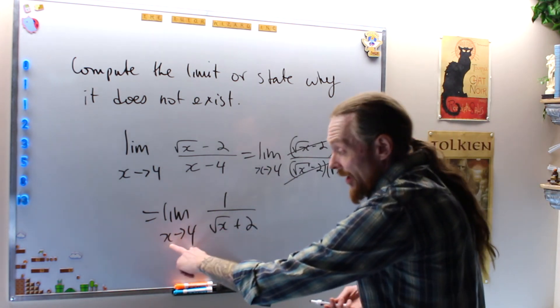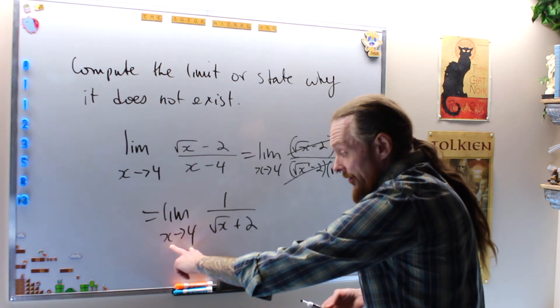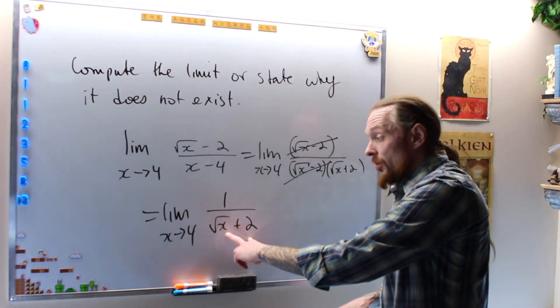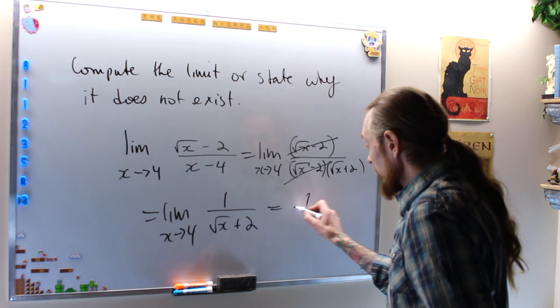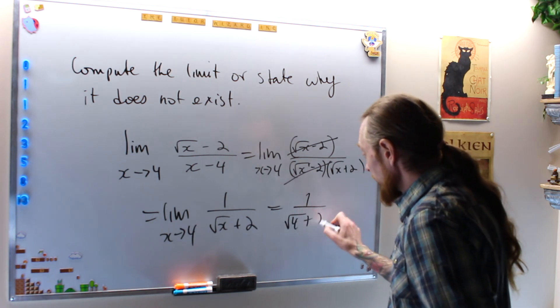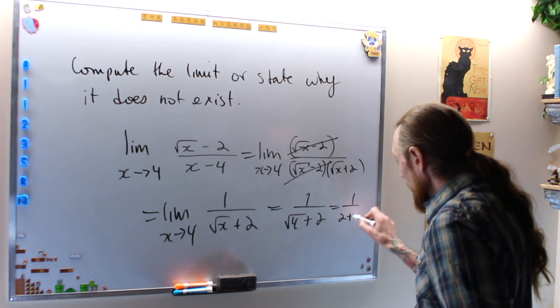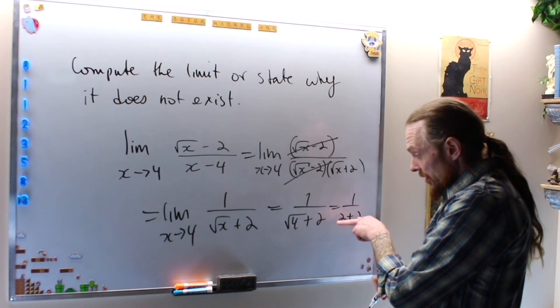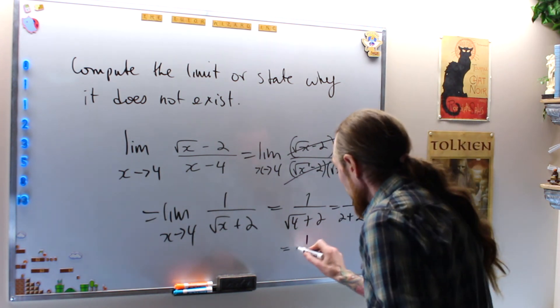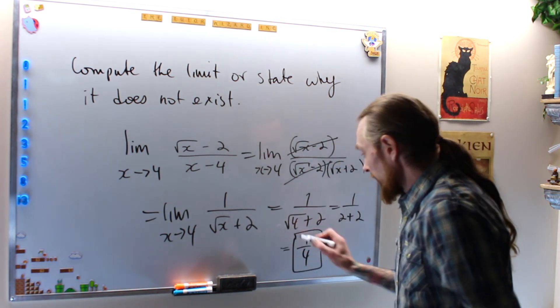Where am I going? x is going to 4 still, but now, do I have a problem? No, so I can put that in there. This is equal to the square root of 4 plus 2, which is equal to 1 over 2 plus 2, that's a barney math. 2 plus 2 is 4, that's correct, so 1 quarter. The limit is 1 quarter.